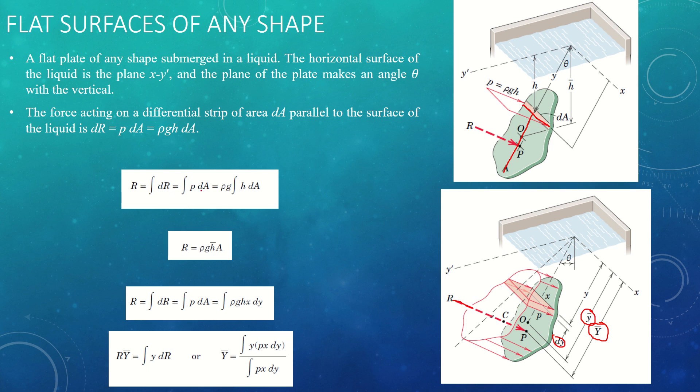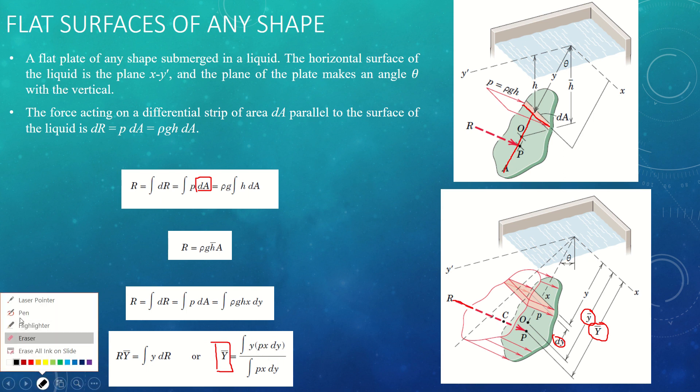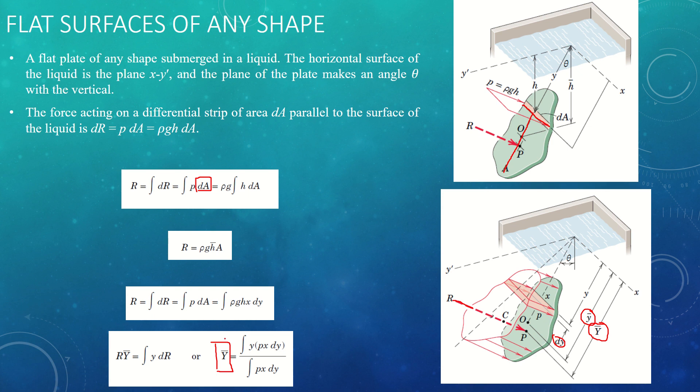So the same thing you need to find the value of dA for different pressure up and y down. And you will find out that y prime, that is the pressure for the center surface, is a function of y p x dy. As you know, p is again the value of pressure.